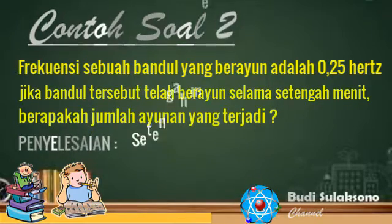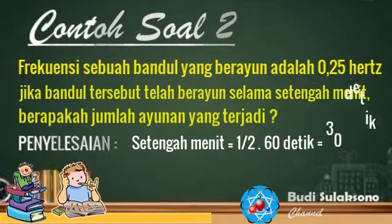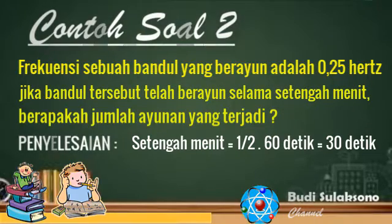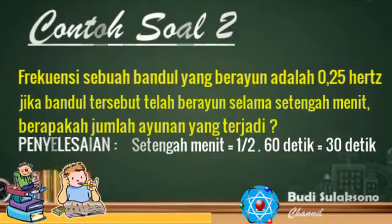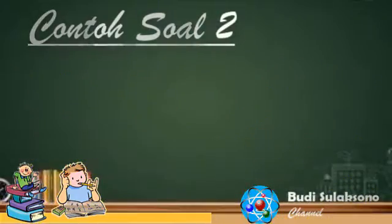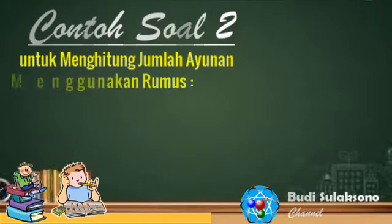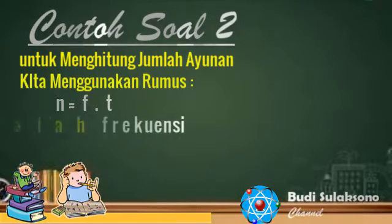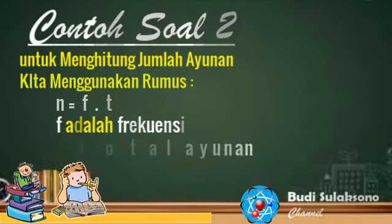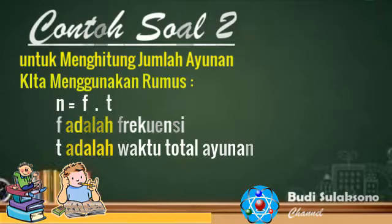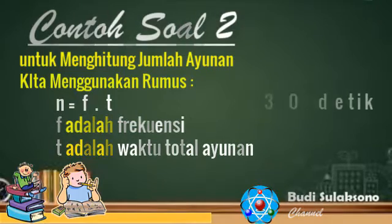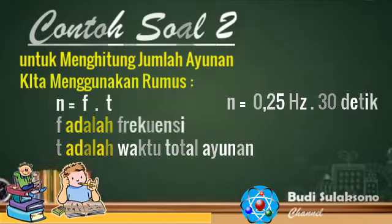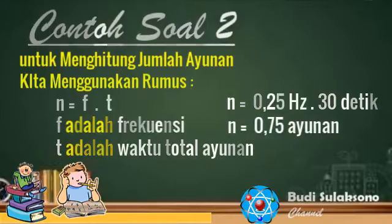Penyelesaian: diketahui setengah menit sama dengan 1 per 2 kali 60 detik, sehingga setengah menit sama dengan 30 detik. Untuk menghitung jumlah ayunan, kita menggunakan rumus N sama dengan F dikali T, di mana F adalah frekuensi dan T adalah waktu total ayunan. N sama dengan 0,25 x 30, sehingga diperoleh nilai N sama dengan 7,5 ayunan.